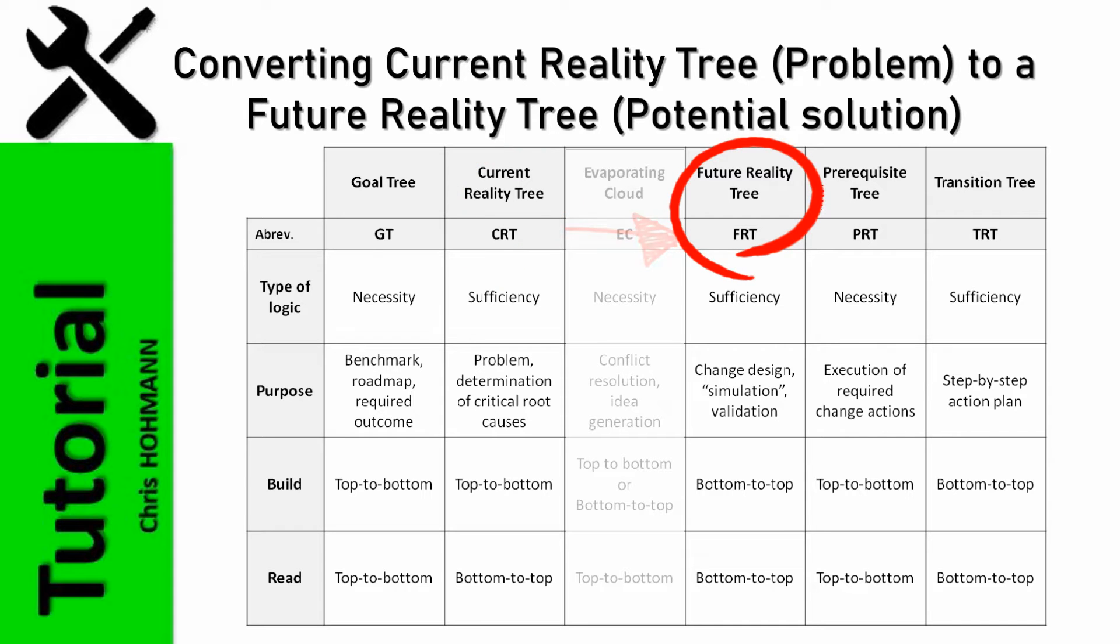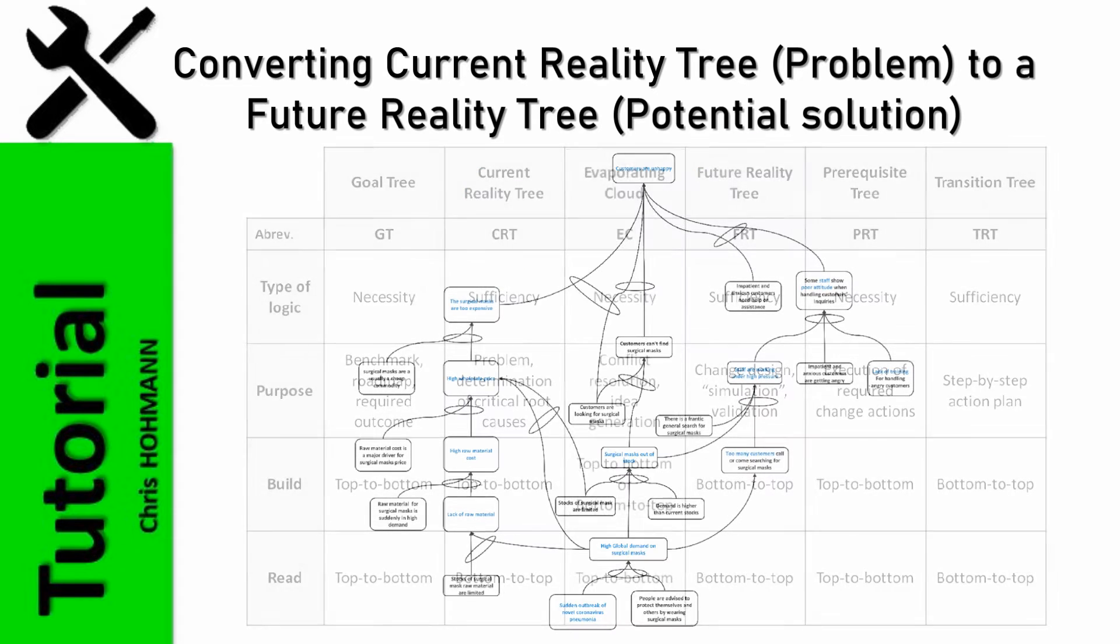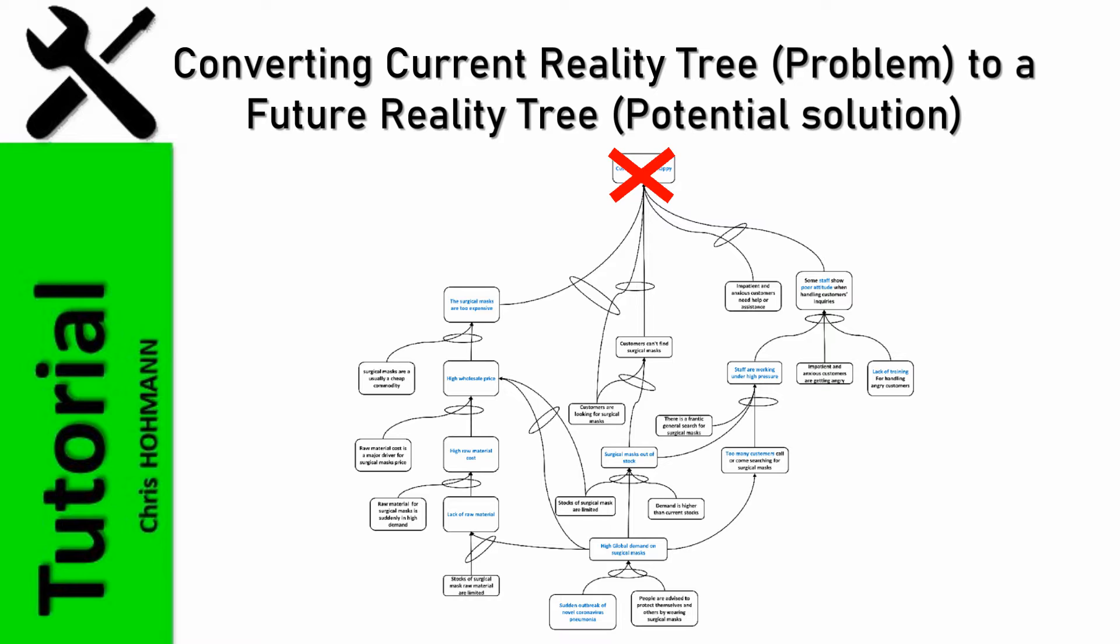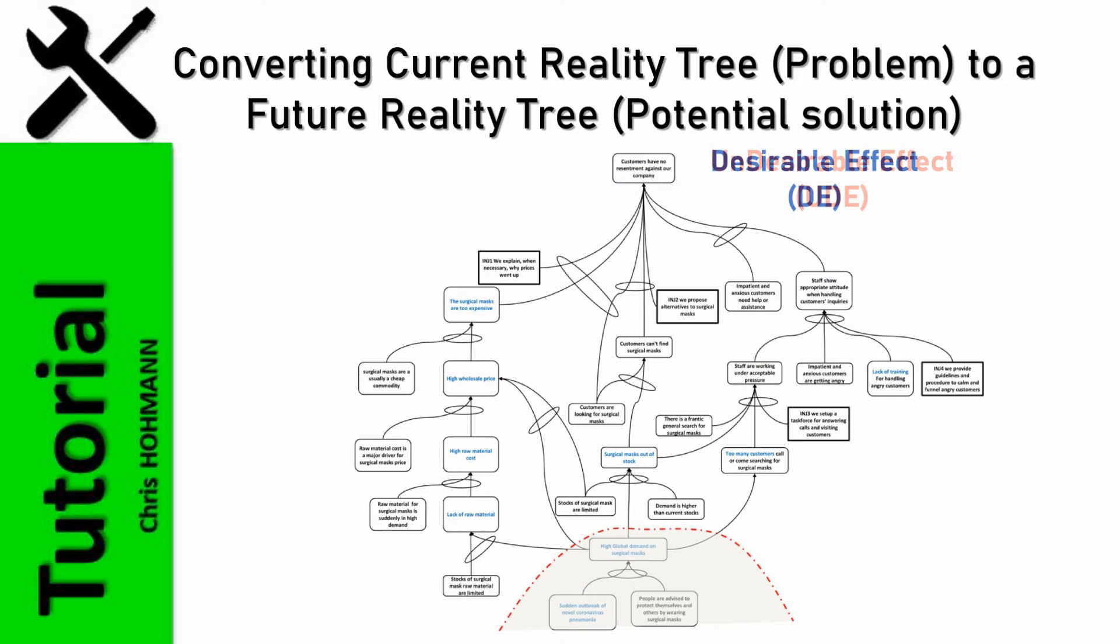This future reality tree is first a trial to neutralize the negative outcomes, we call them undesirable effects or UDEs, and turn them into desirable effects.